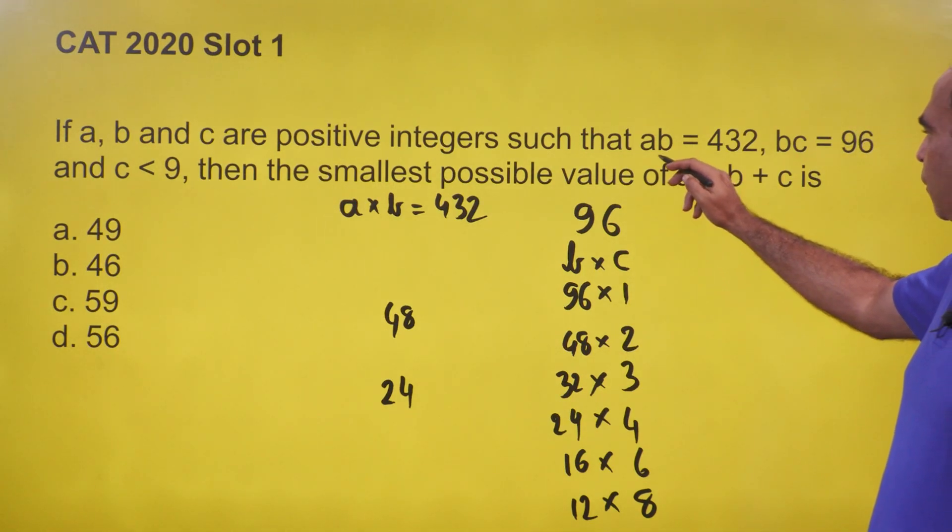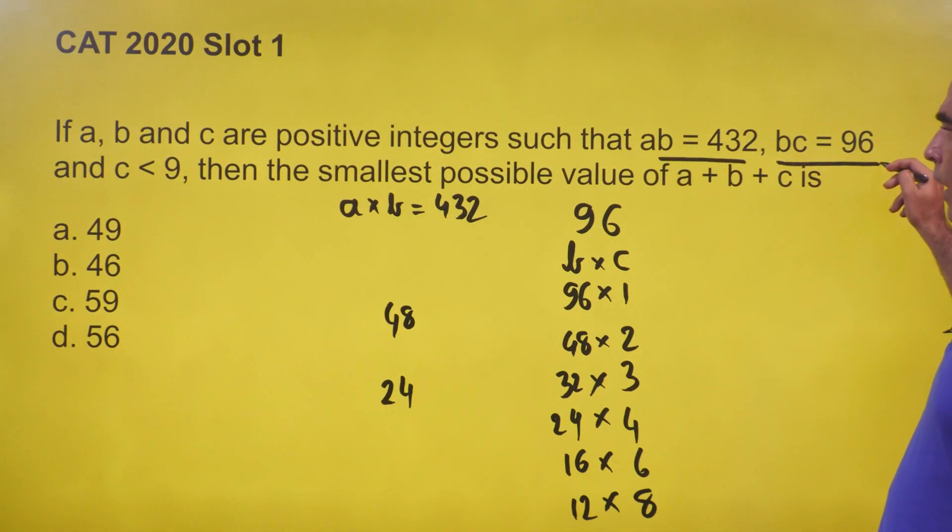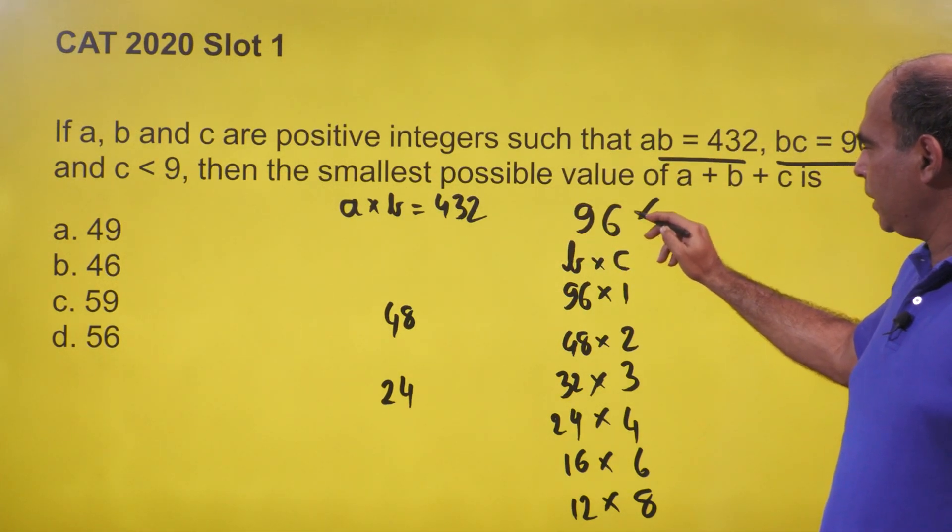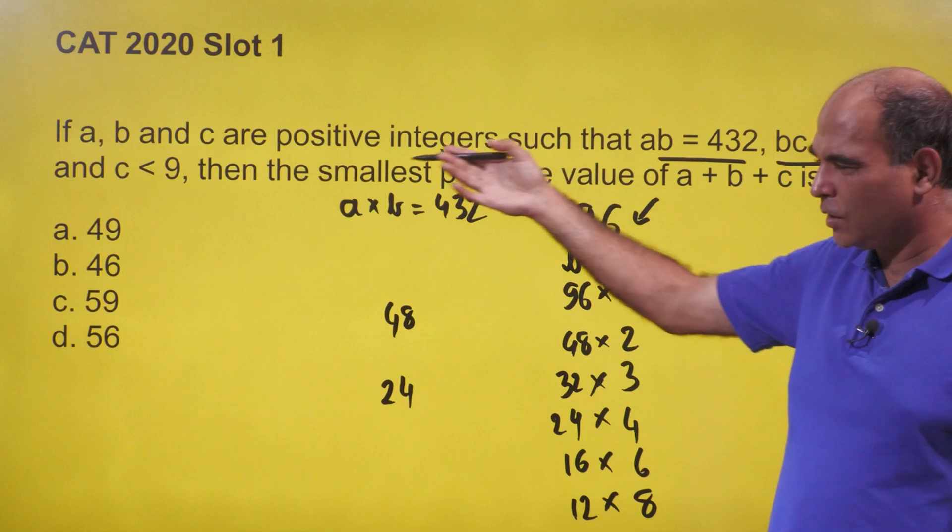a, b, and c are positive integers such that ab = 432, bc = 96, and c < 9. The trigger you have to pick up is c < 9 with bc = 96.